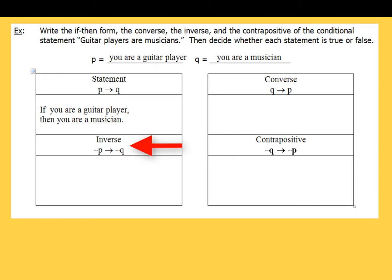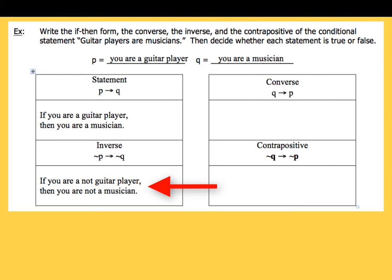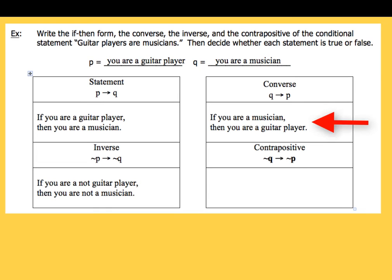Moving on to the inverse — not p implies not q. The negation of 'if you are a guitar player' is 'if you are not a guitar player,' and then 'you are not a musician.' For the converse, we switch the hypothesis and conclusion — q comes first, p comes second: if you are a musician, then you are a guitar player.